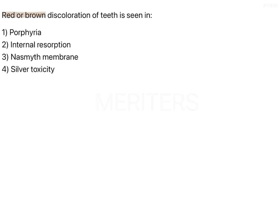Red or brown discoloration of teeth is seen in — and the options are porphyria, internal resorption, Nasmyth membrane, and silver toxicity.